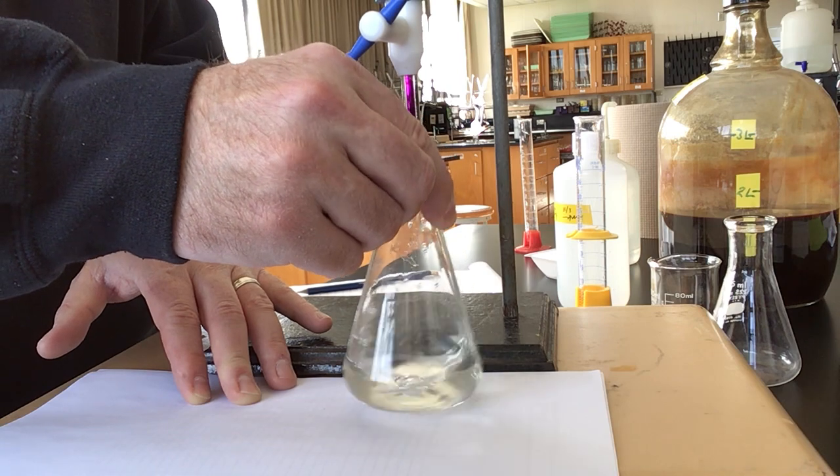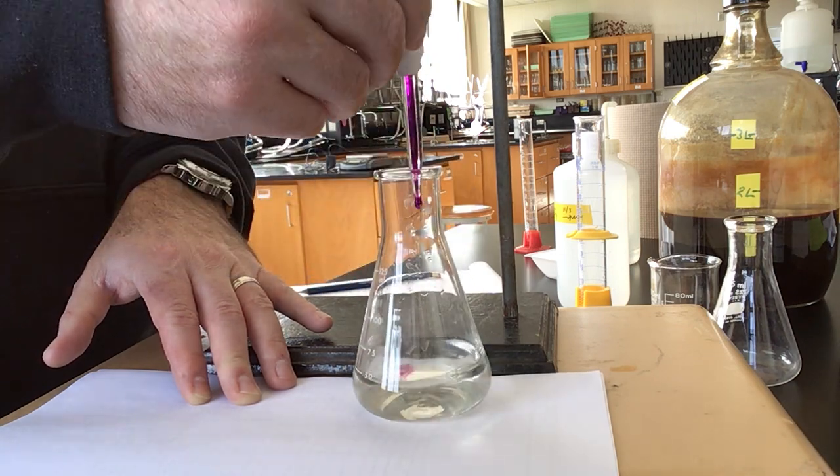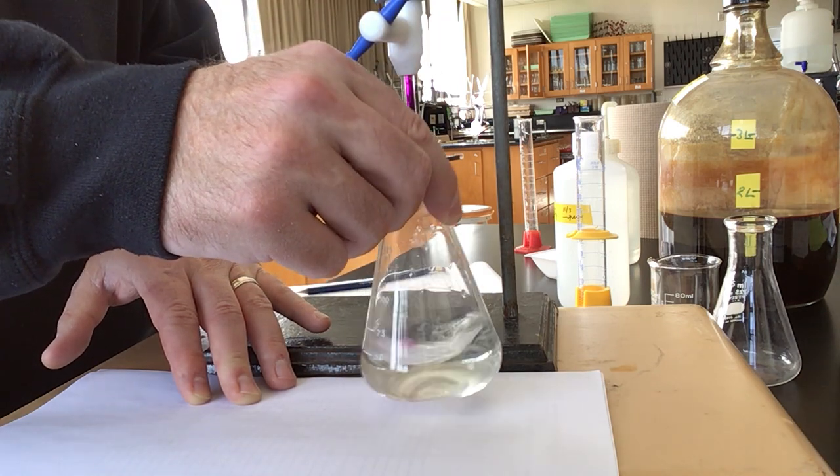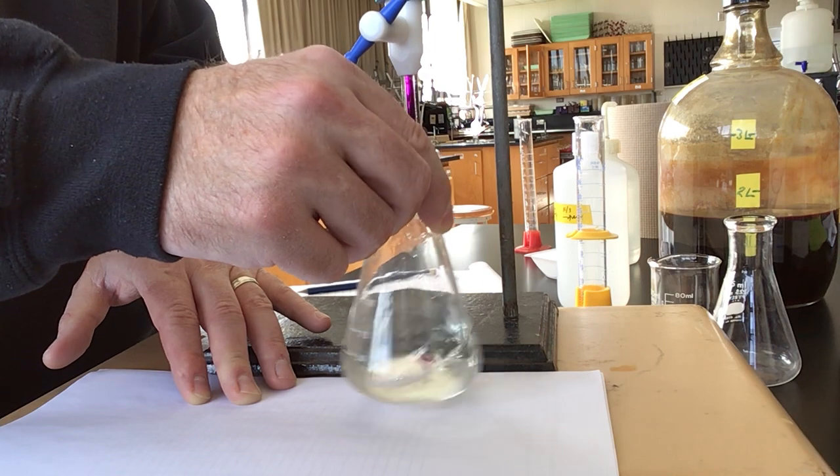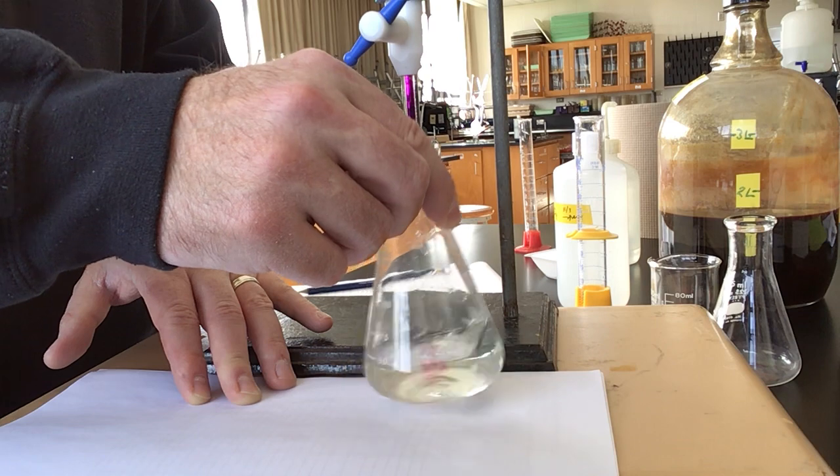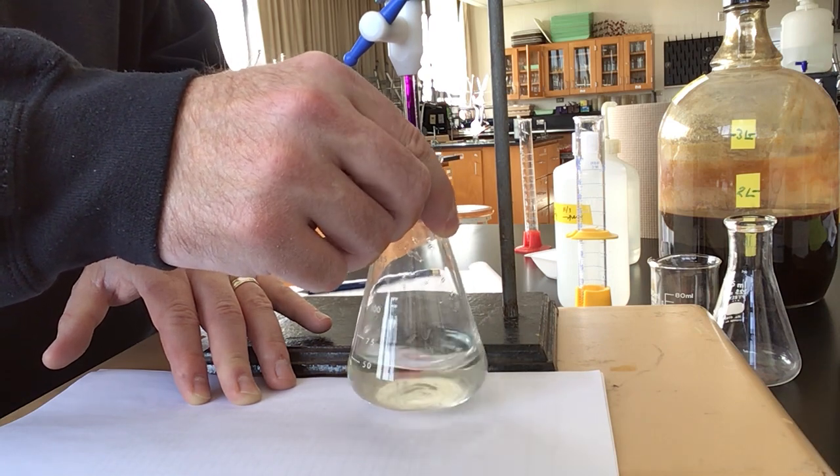you can always do a dummy trial to figure out how much titrant you should be adding approximately. In those dummy trials, you generally overshoot the endpoint, but you end up with a value that's really close to what it should be. That way, for your subsequent trials, you can go really fast up until you get close to the endpoint, and then add drop-wise slowly mixing.